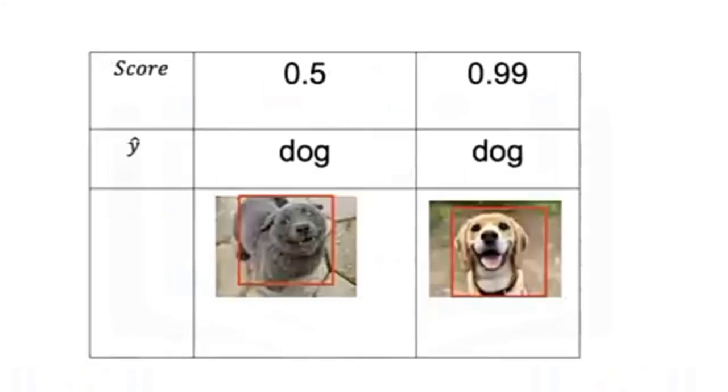Many object detection algorithms provide a score, letting you know how confident the model prediction is. Each column in the table has an image and its prediction. The first row is the score ranging from 0 to 1. The second row is the class. And the third row is the image and its bounding box.